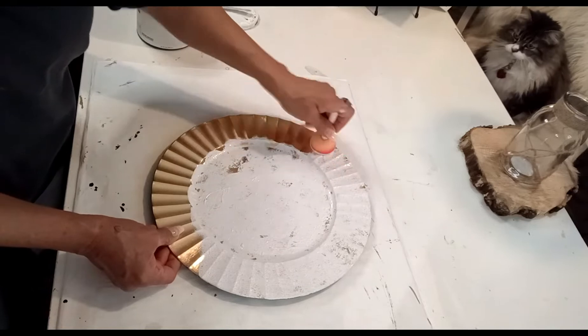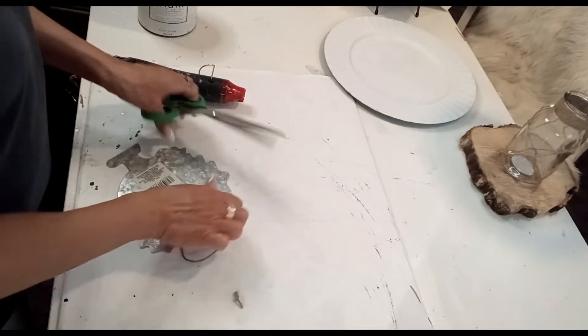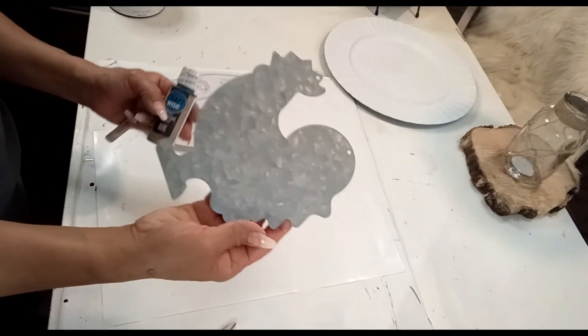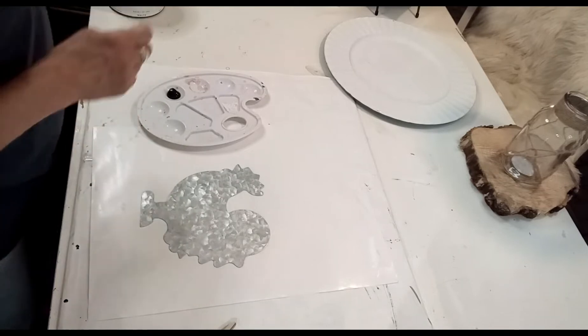Once I'm done with the plate I will put it to the side. Now I have this rooster from Dollar Tree. I'm going to give it one coat of this black chalk paint.